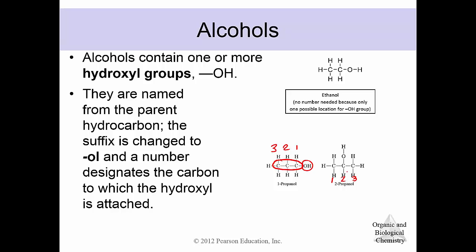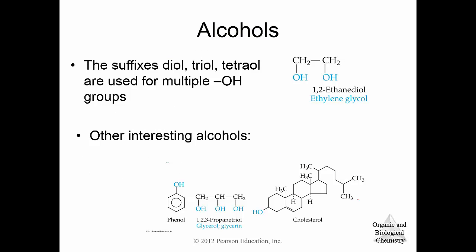This one is 2-propanol. Your numbering system starts from the end closest to the functional group. Notice there is no such thing as 3-propanol because 3-propanol and 1-propanol are the exact same thing. You can also have several alcohol groups in one molecule and we call that diol or triol. There are some interesting examples like cholesterol, or glycerol — also called glycerin — which is a triol with three alcohol groups.